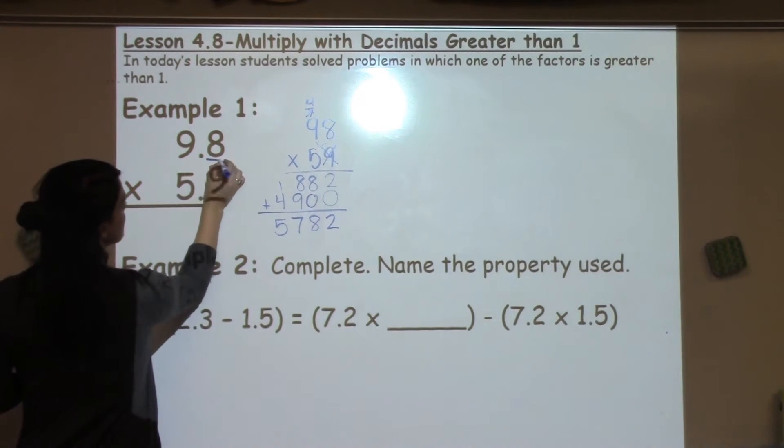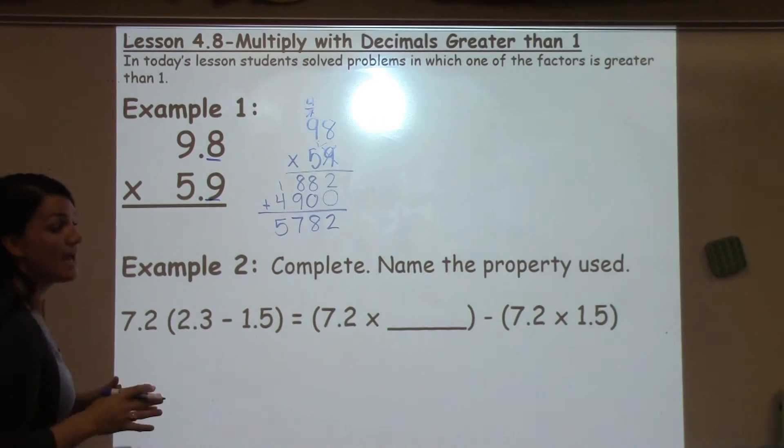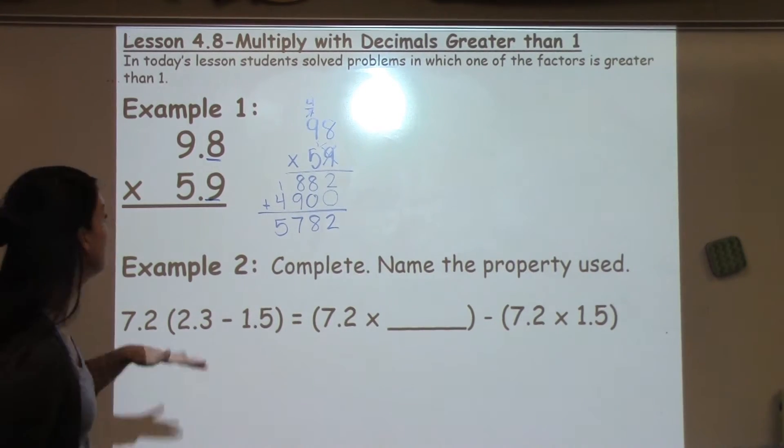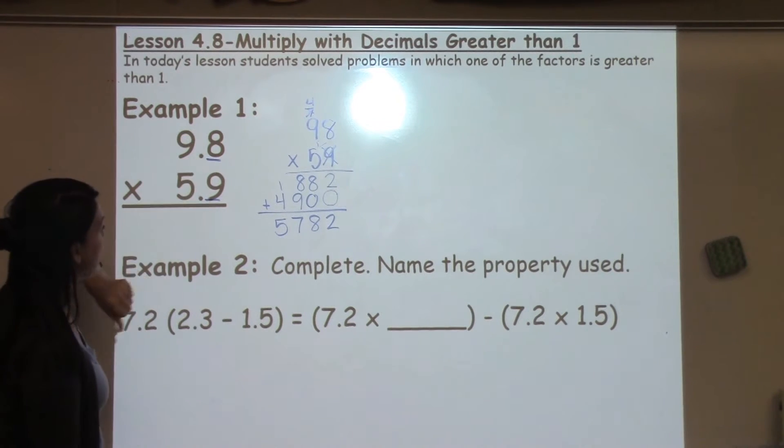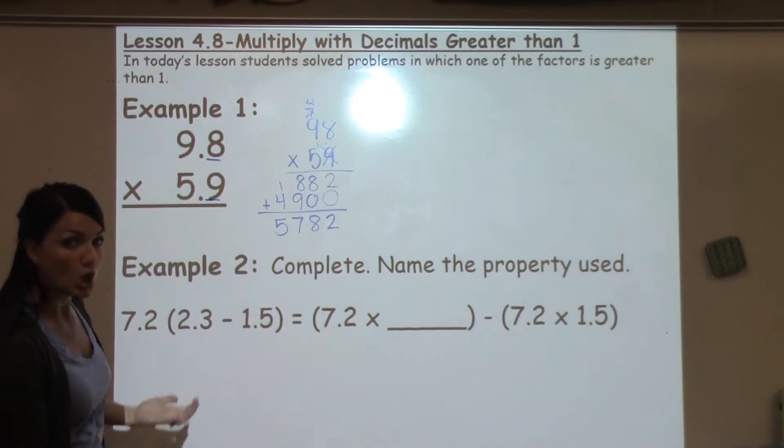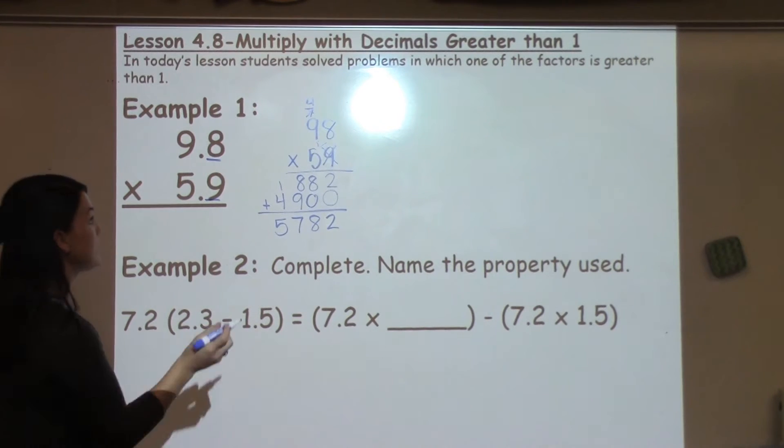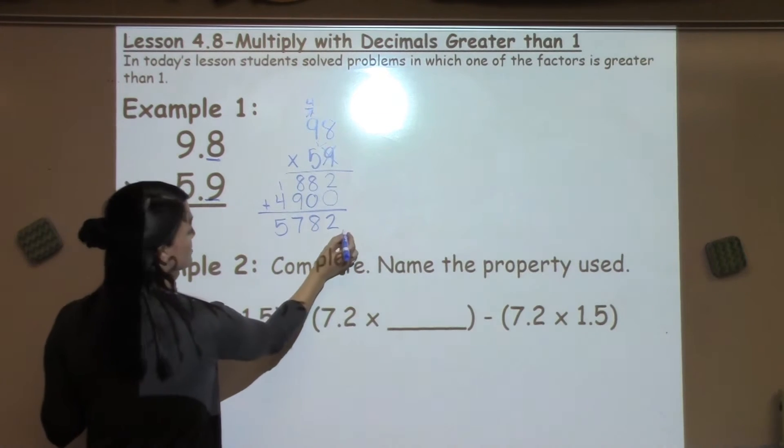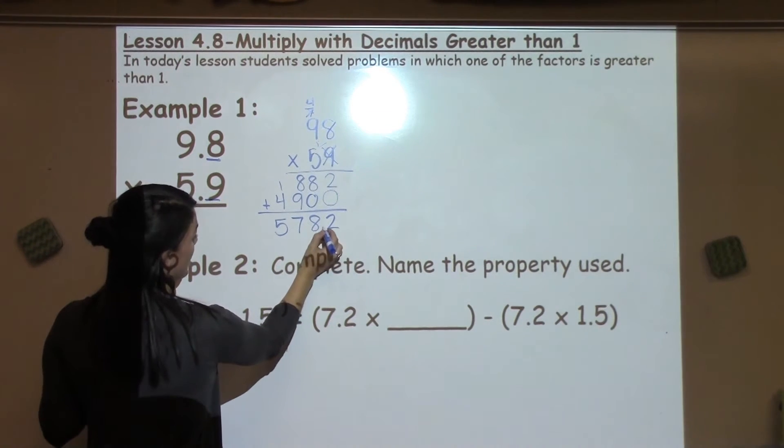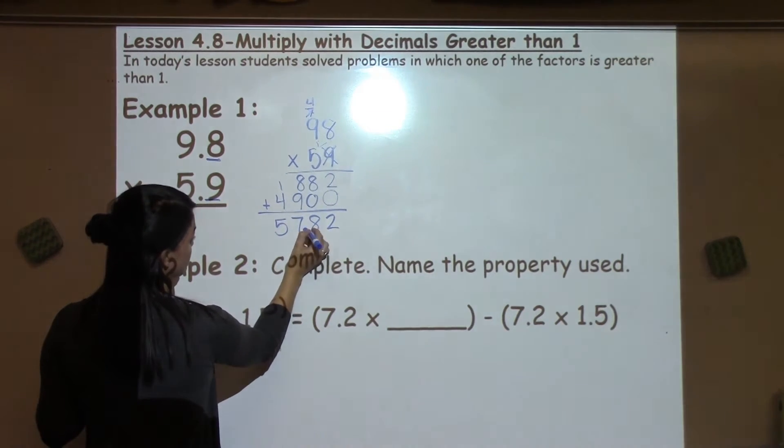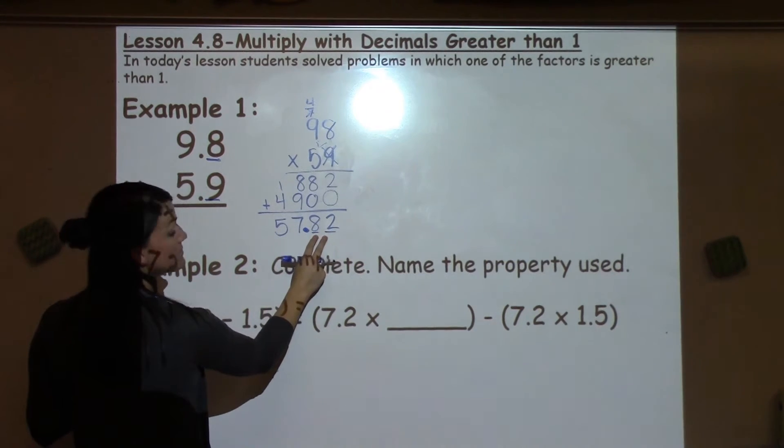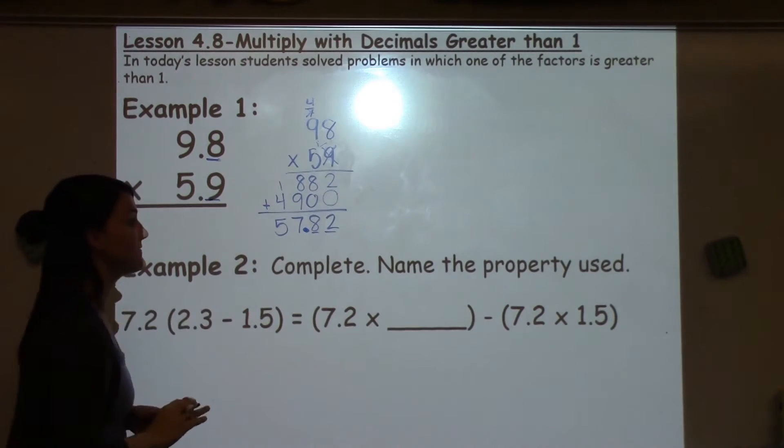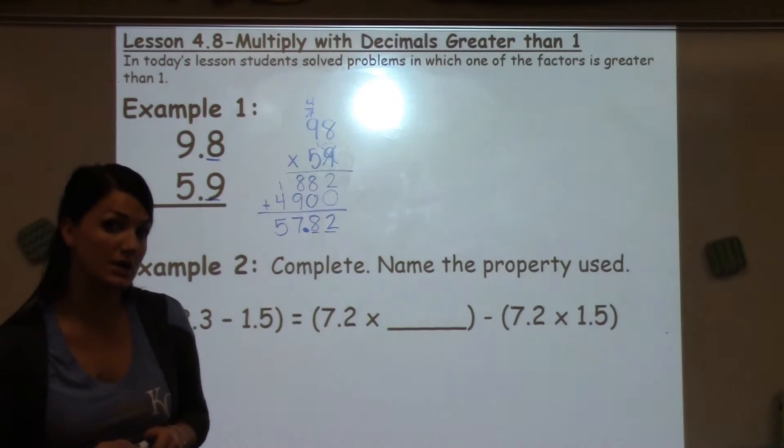What we tell students to do is go back and look at both numbers that we're working with. How many total numbers are behind the decimal? Well, in this problem, there's one number behind the decimal, and in this problem there's one. So total, there are two numbers behind the decimal. So total in my answer, I want two numbers to be behind the decimal. So my answer is 57.82.